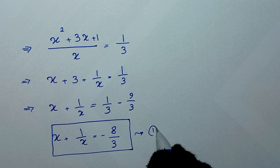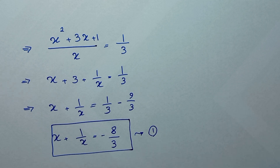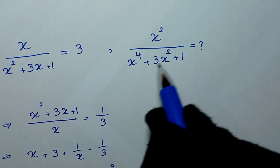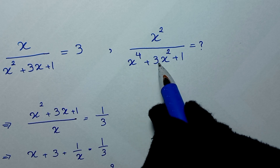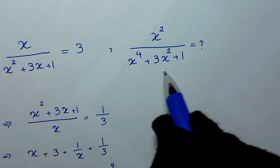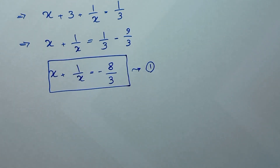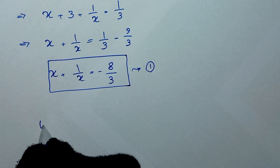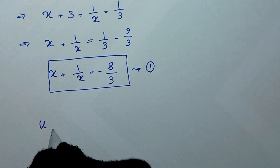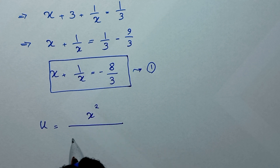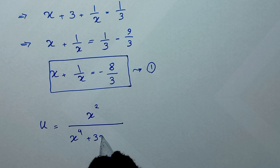Now we want to find x squared over x to the power of 4 plus 3x squared plus 1. We let this expression equal u, so u is equal to x squared over x to the power of 4 plus 3x squared plus 1.